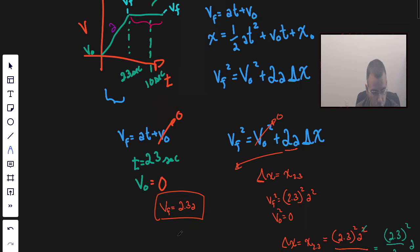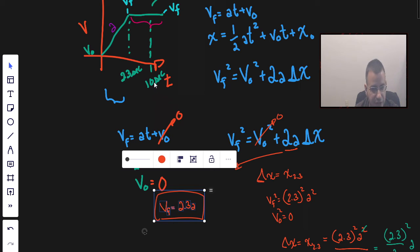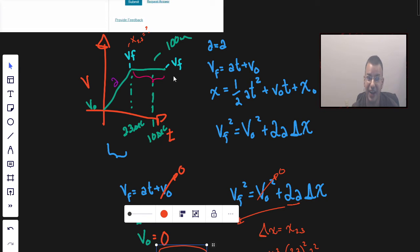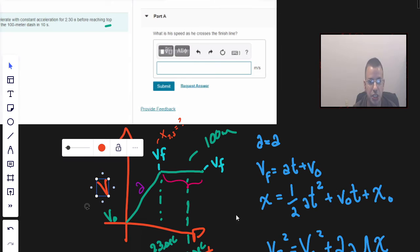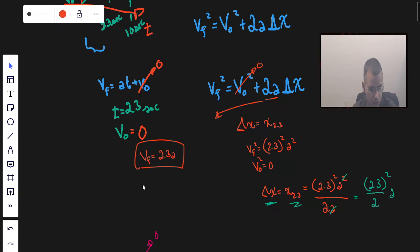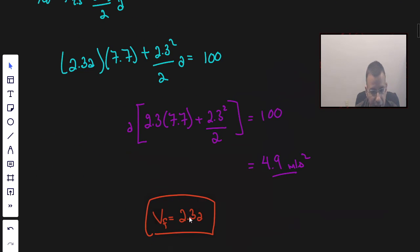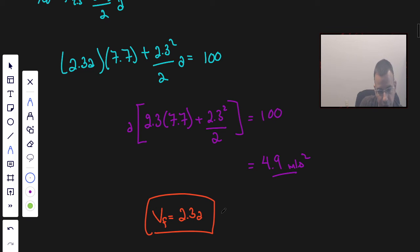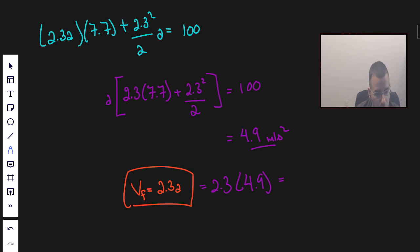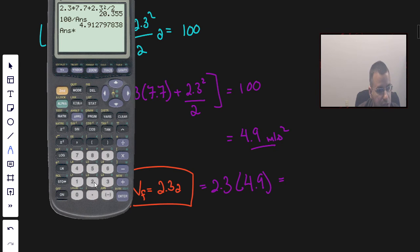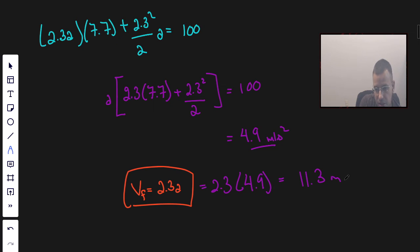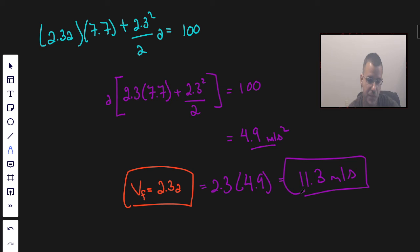We can now go back to find our v_final, which is the speed at which he crosses the finish line. v_final equals 2.3 times acceleration, so that equals 2.3 times 4.9, which gives us 11.3 meters per second. Final answer: 11.3 meters per second.